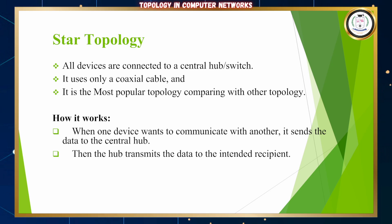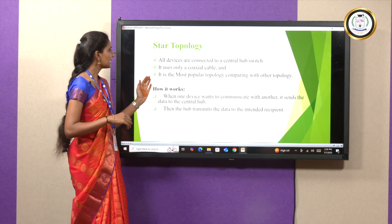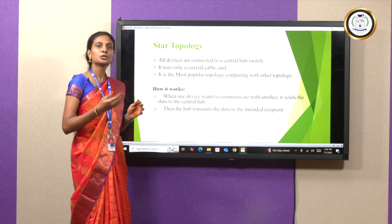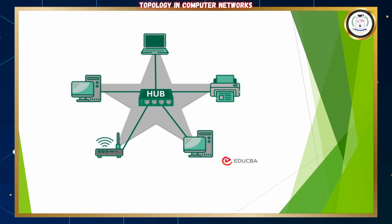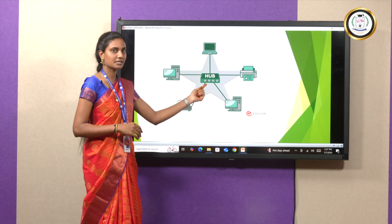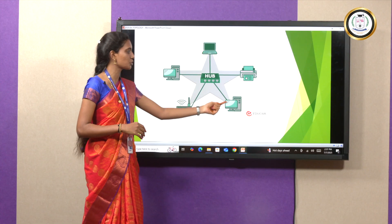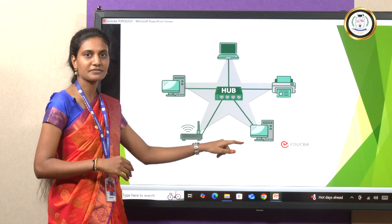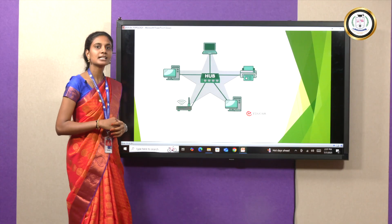The next one is star topology. In star topology, all the devices are connected with a central hub or switch. It uses coaxial cable and it is the most popular topology. When one device wants to communicate with another, it sends the data to the central hub, and the central hub will transfer the data to the other devices. In the diagram, there are five devices all connected to the central hub. When the first device wants to send a message to the third device, it first sends to the central hub, which then transfers the data to the third device.